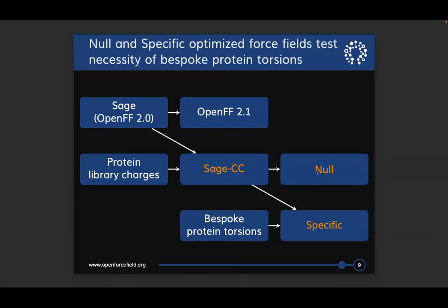I'm going to tell you about two different models. Taking the starting force field as a fork of SAGE with protein library charges included, I call that initial unoptimized point SAGE-CC. If I then optimize it with no additional parameter types — same number of parameters and types as in SAGE for small molecules — I call that the null model. A second model I call the specific model has about 100 extra bespoke torsion parameters modeling proper torsions in proteins, inspired by the same number and types of parameters in the FF14SB force field.